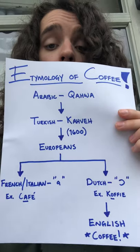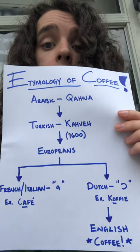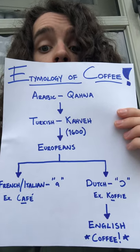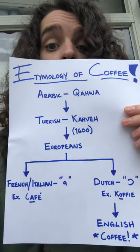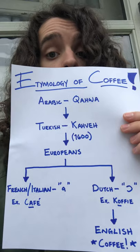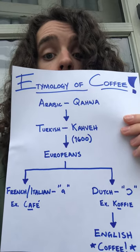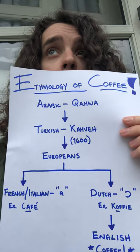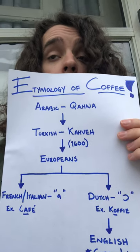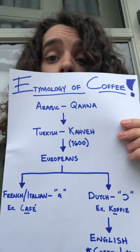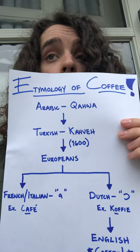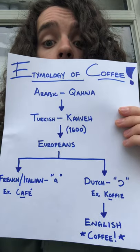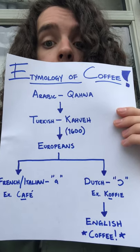So right, we have the Turkish 'kahve.' Now this is where we can see a divergence start to form. Around 1600 is when the Europeans got a hold of this word and sort of changed — not on purpose, of course, but different languages pronounce different things differently — so they sort of adapted it to fit how they phonetically pronounce things.